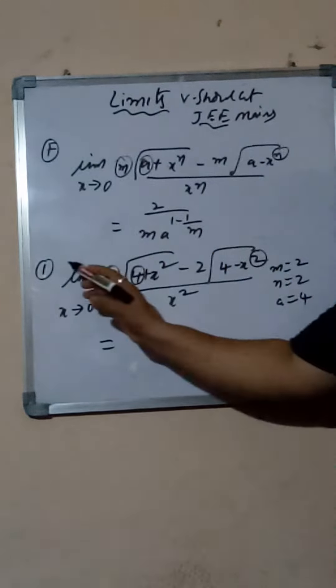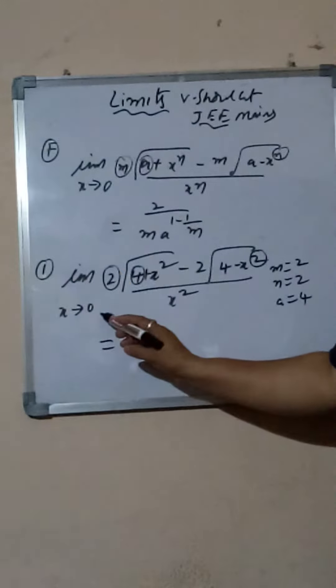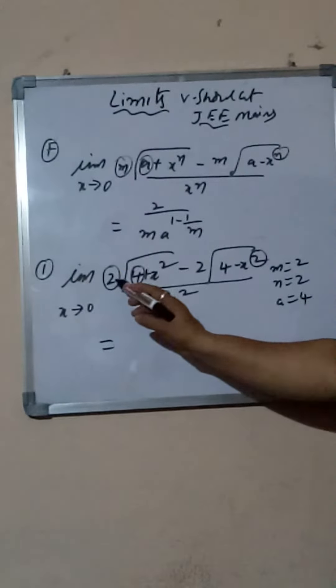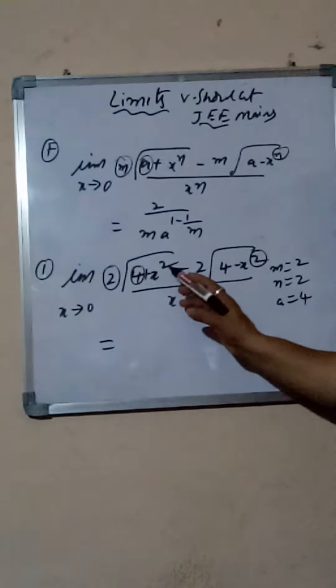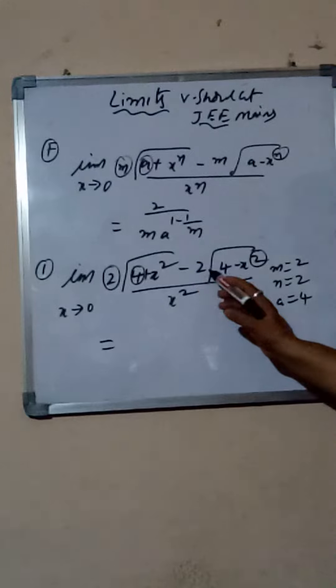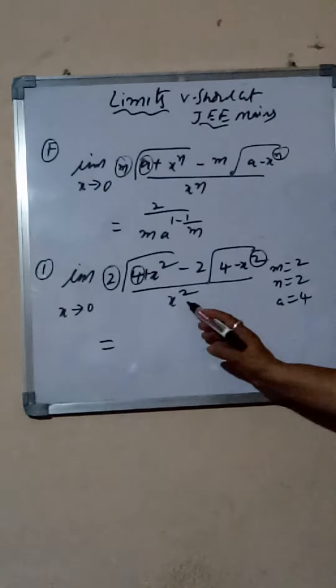Just listen to this actual question: limit x tends to 0 of square root of (4 plus x squared) minus square root of (4 minus x squared), all divided by x squared.